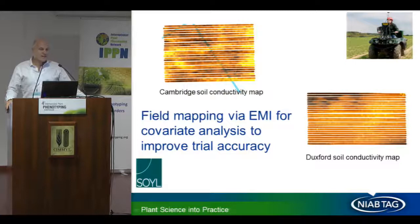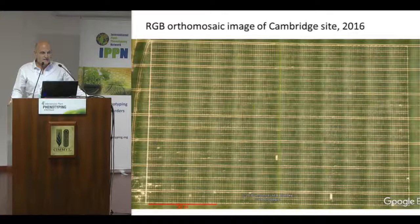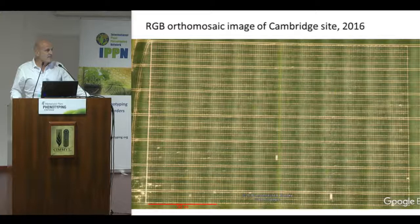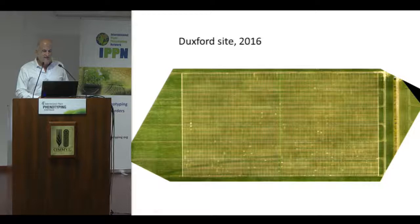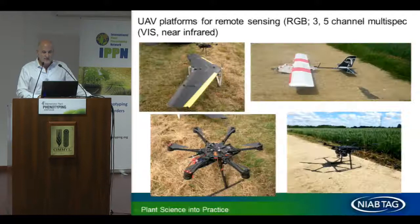Covariate collection begins with field mapping using electromagnetic induction, applying measurements on a plot basis, which can help improve the accuracy of our predictions. Here's an image of the Cambridge site, one of the two sites. The R-squared precision for the trial was 0.95 for yield, which is good, and there are only two very obvious drilling errors. The Duxford site is similar — these are very large trials, larger than what we're used to working with, but not large for a breeding program.